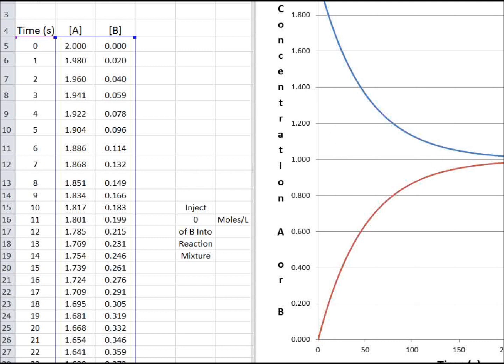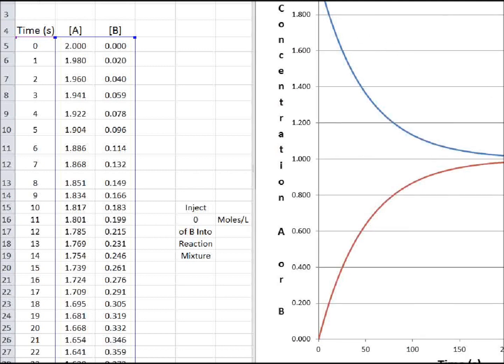Okay, the blue line is the concentration of A versus time, and the red line is the concentration of B versus time. Since B started at zero, it builds up, and A decreases, and they become the same at equilibrium. And that you would expect from a one-to-one equilibrium.